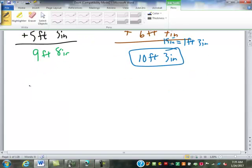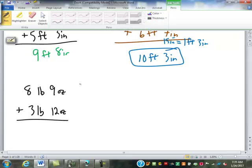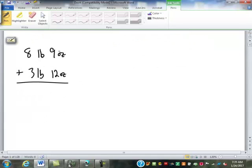How about something like this? Tell me where to start. So ounces, nine and twelve make twenty-one ounces. What do we do with that? So one pound is sixteen ounces, good. What's left? Five ounces, okay.